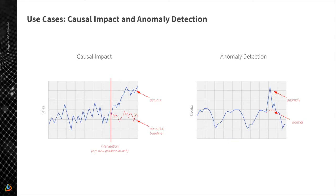We want to measure the uplift — the difference between the no-action baseline, which we don't observe, and the actual outcome. We can estimate this baseline using forecasting and then analyze the difference. It's not always possible to do A/B testing properly in applications like new product launches, so forecasting-based measurement is often preferable. This essentially boils down to signal decomposition — separating normal effects like seasonality from effects caused by the marketing campaign.